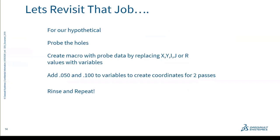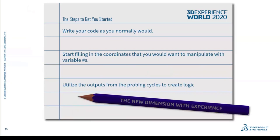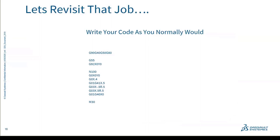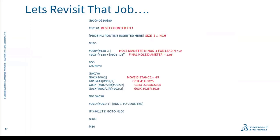My approach: write the code as I normally would — freehand the toolpath — and then fill in the coordinates you want to manipulate with variable numbers. Wherever you see a value that changes based on probe data, replace it with a variable. Use the probe data to fill in those variables, then utilize the outputs from the probing cycles to create the logic you need. Here's my handwritten code: G55, G0, G3 with R values for arcs to create a circle.